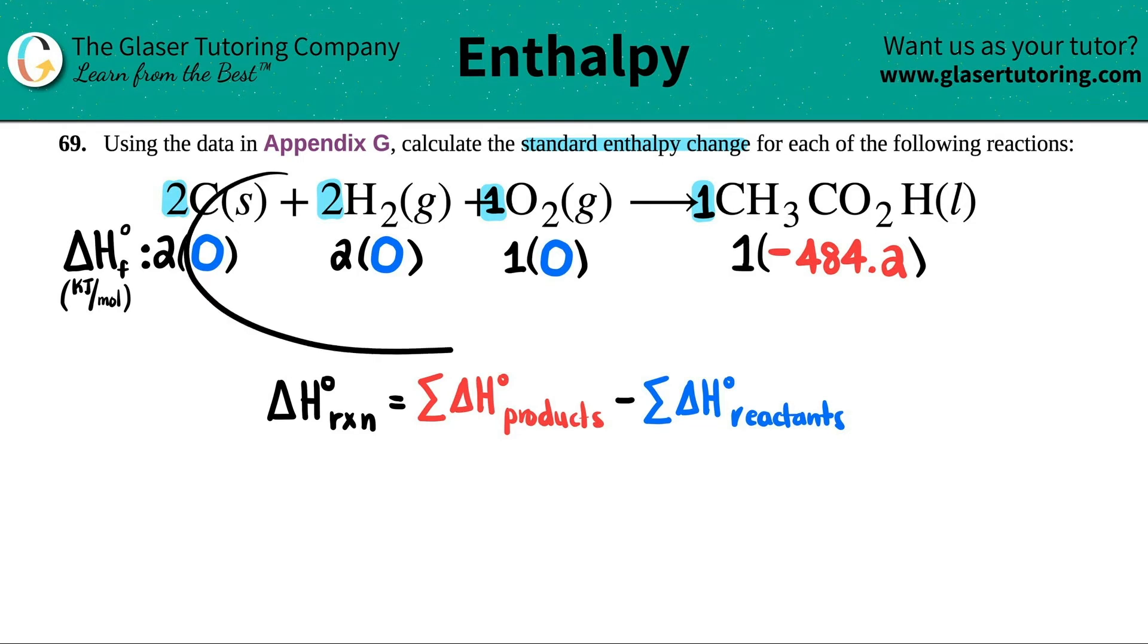Now I need to get one number for the blue and one number for the red, but I only have one compound in my product. So my product would just be negative 484.2, because one times that number would be the same. Technically you would add all these up, but since it's all zero, this is just going to be zero.